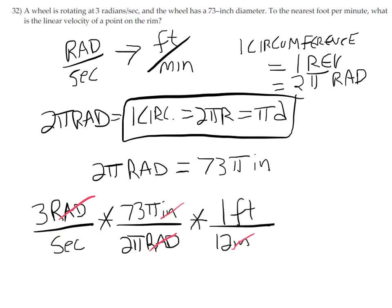We are now in feet per second. We want feet per minute. One more ought to do it: 60 seconds per one minute. This allows us to cancel the seconds out. Now the units that are left are feet per minute. That's what they wanted. So we go to our calculator.